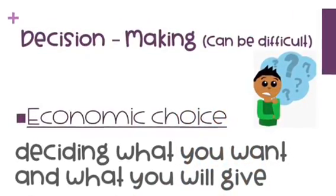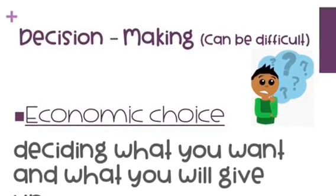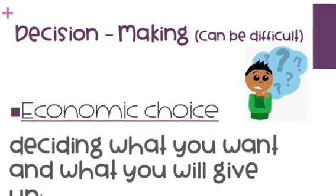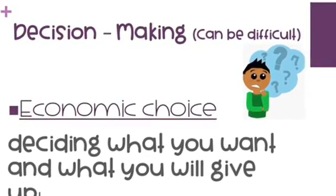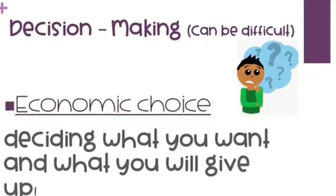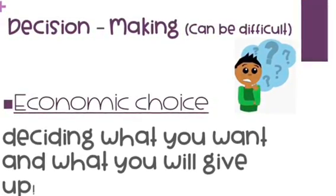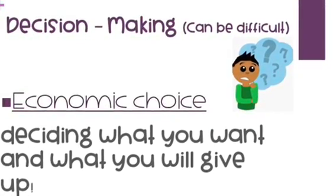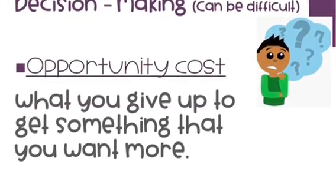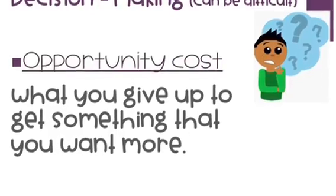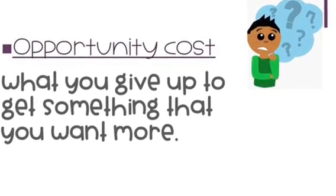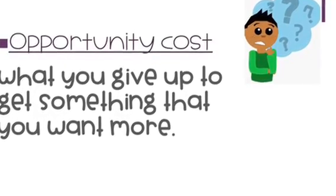It's nice that the government allows us to make our own choices. But sometimes decision making can be very difficult. There are many economic choices that we make every day. An economic choice is deciding what you want and what you will have to give up in order to get your first choice. When we make an economic choice, that something that we give up is actually called an opportunity cost — what you give up to get something that you want more.